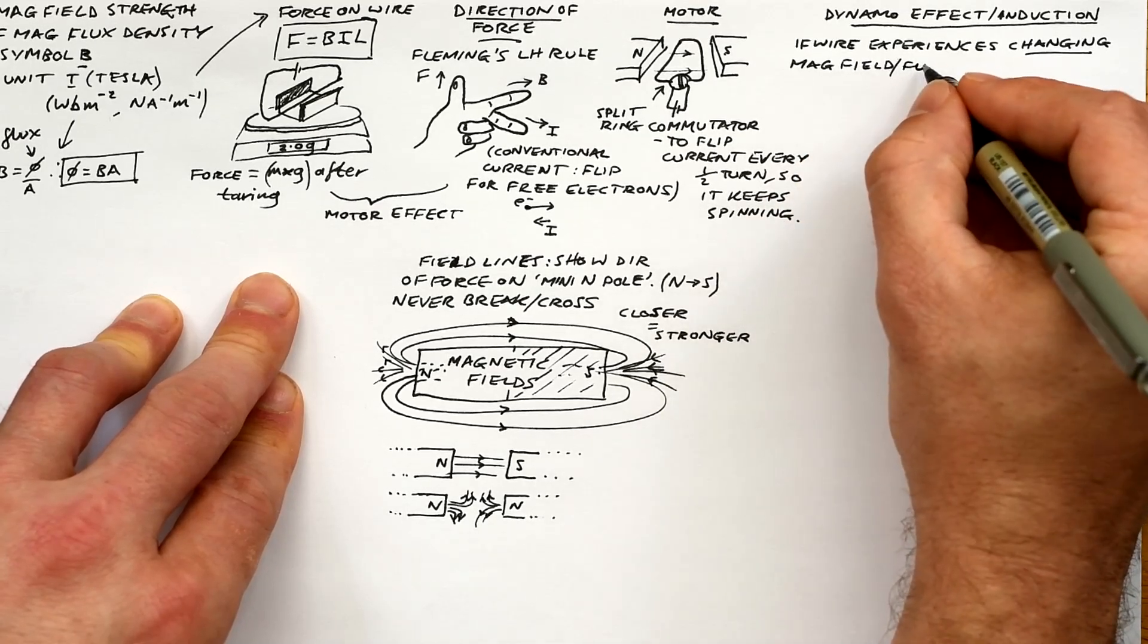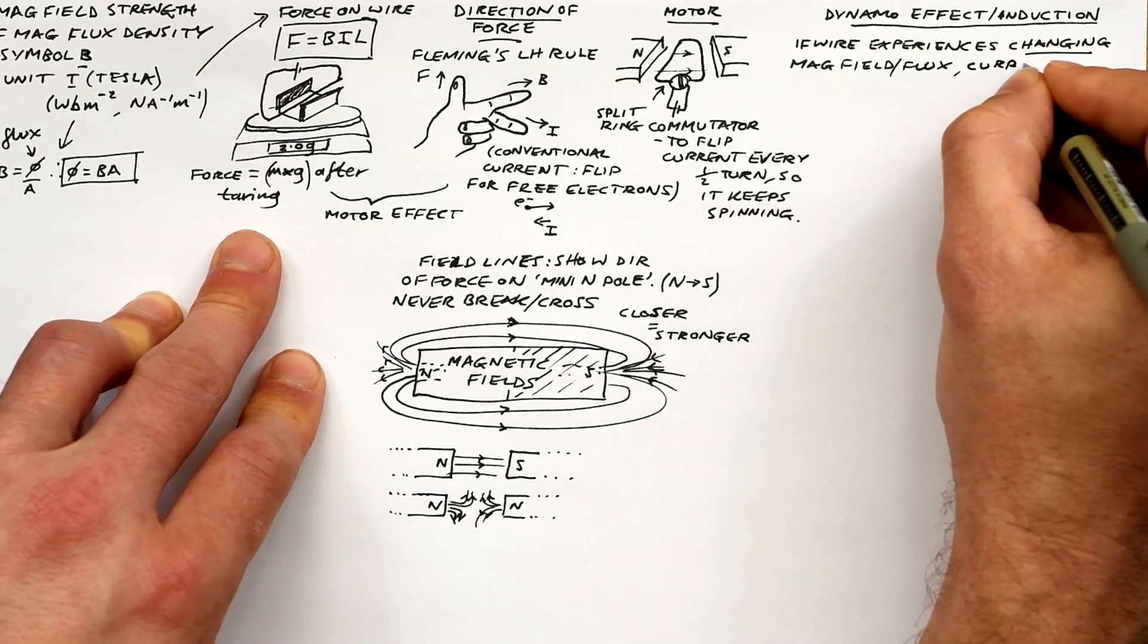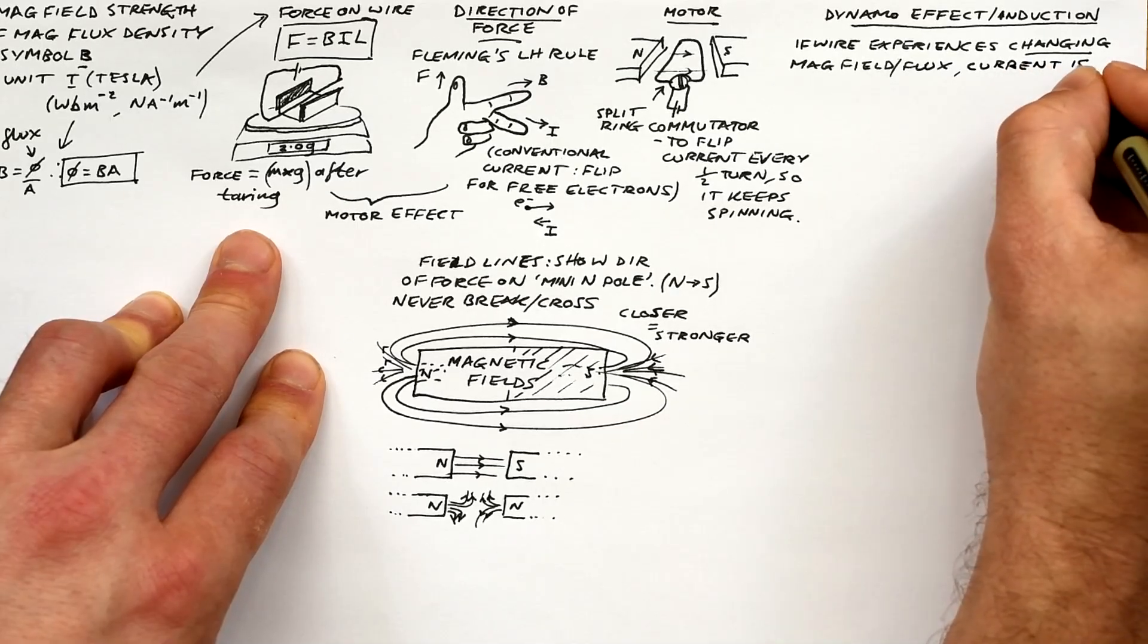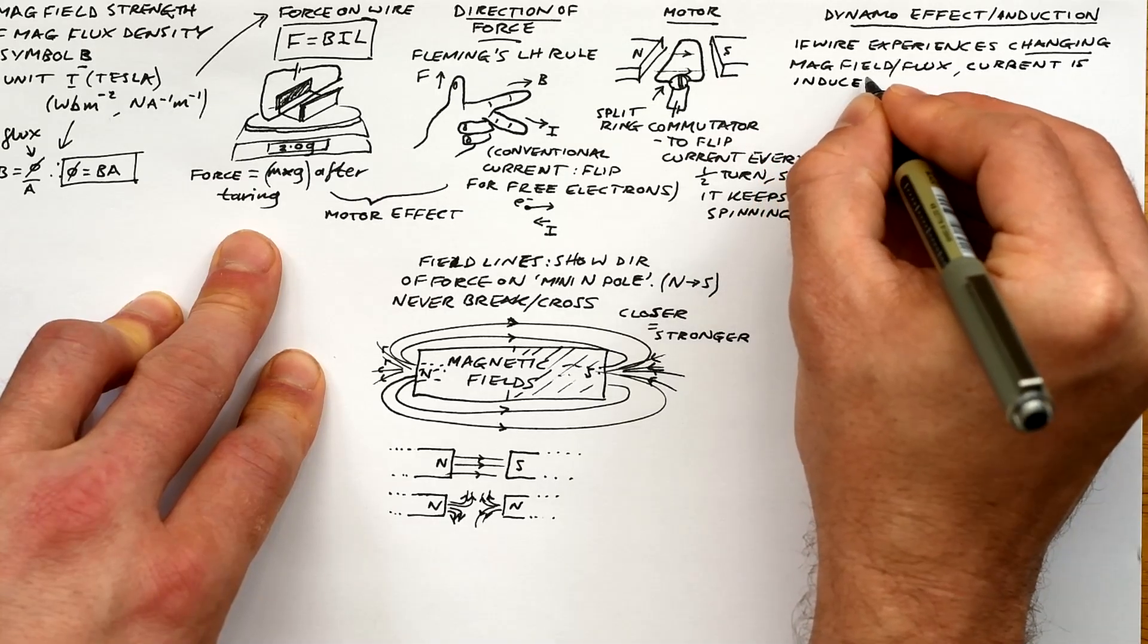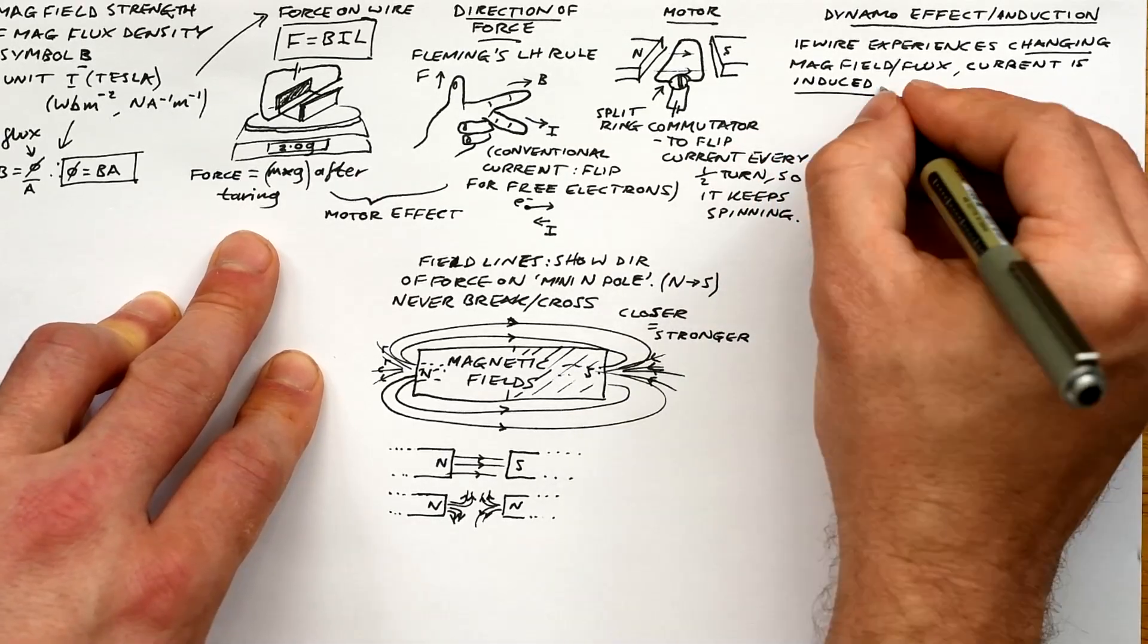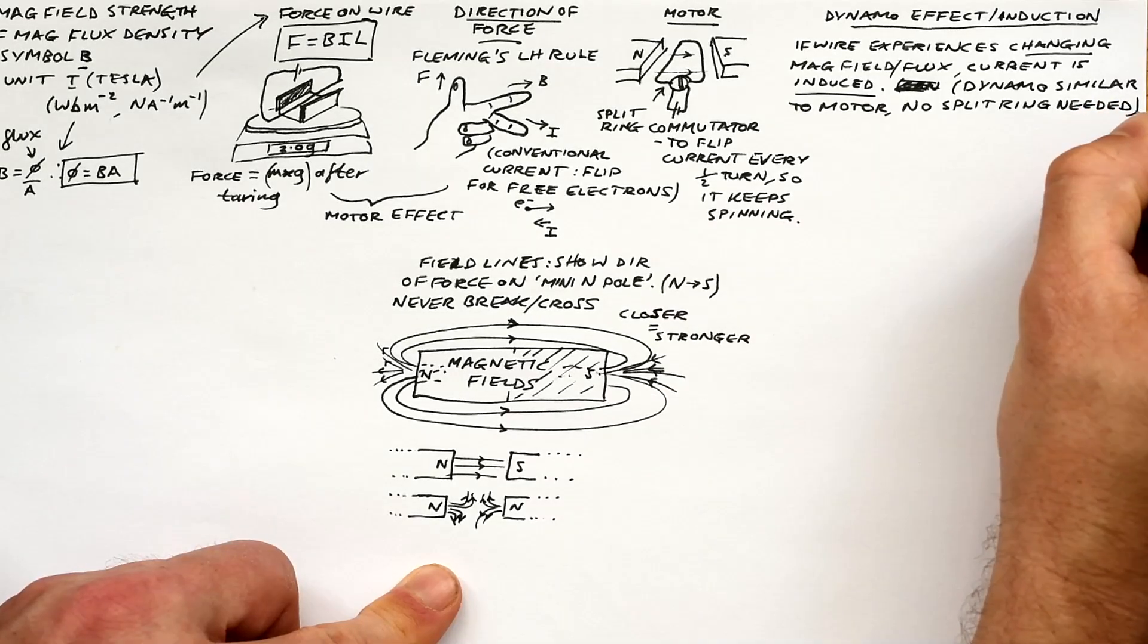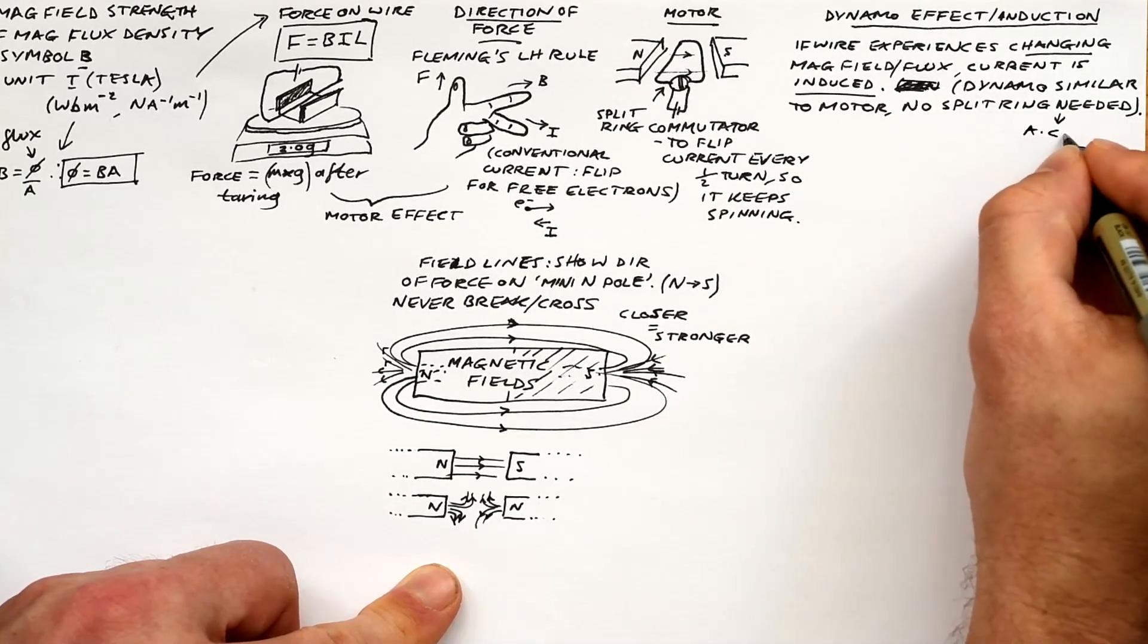The opposite of the motor effect is the dynamo effect. So it's all about when a wire experiences a changing magnetic field or an A-level change in flux. That's when currents are induced in wires and dynamos are basically motors, but we turn them and current is induced in the coil. They're very similar, but we don't need a split ring commutator this time. We can just connect the loop to the circuit with brushes. We're okay with the current flipping every half a turn when it comes out. Just means that it's AC and that's fine.